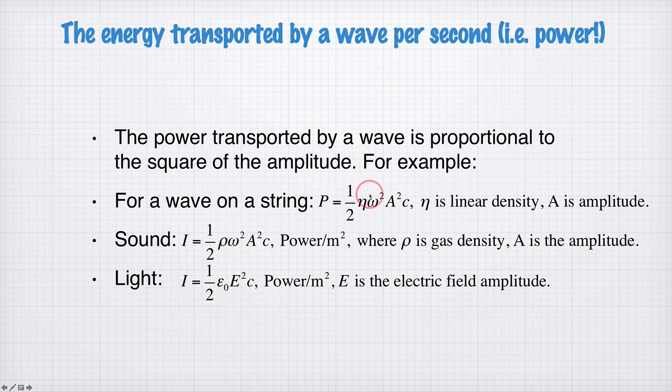So the energy being transported by these three different waves has three different equations. Naturally, they depend on different physical parameters. There are some things here that they have in common. Each of them depends on the square of the amplitude of the wave, and each of them depends on the speed of the wave.